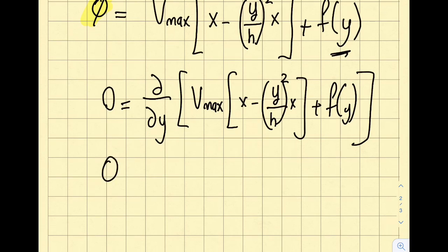Left-hand side is zero. When I take the derivative of this equation with respect to y, V max times x, that vanishes. But the second term that I have over here will stay, so that will be V max times 2yx divided by h squared. And the third term, I'm going to obtain f prime of y.